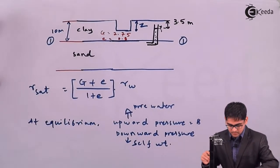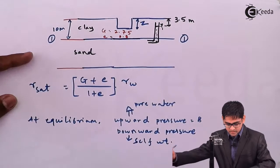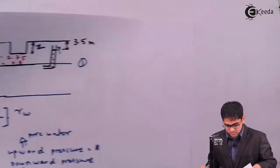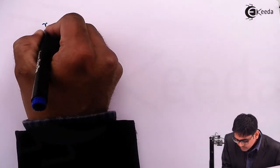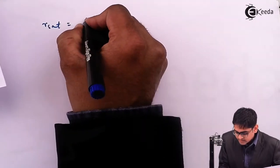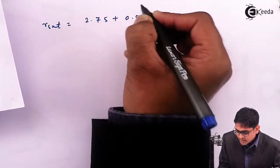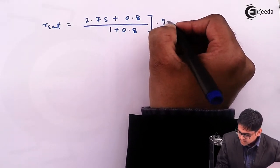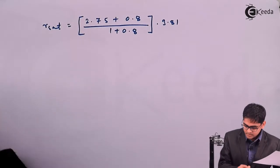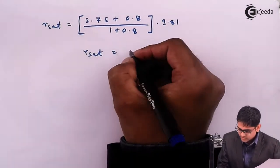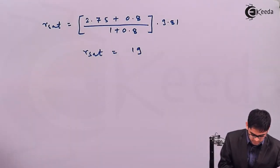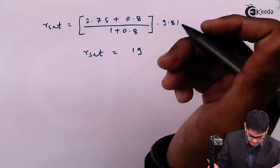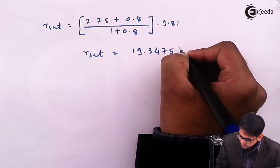Substituting all parameters: γ_sat = (2.75 + 0.8) / (1 + 0.8) × γ_w. Taking γ_w as 9.81 kN/m³ since it is not given in the problem, we get γ_sat = 19.3475 kN/m³, which we round to 19.34 kN/m³.